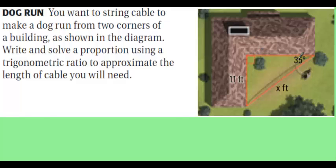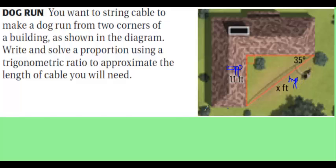You know the dog run is going to make an angle of 35 degrees with this part of the house. That is enough information, and that's why trigonometry is useful — it helps you solve problems without a lot of information. For the 35-degree angle, 11 is the opposite side, and the X we're trying to find is the hypotenuse because it's opposite the right angle. We look for whichever ratio is opposite over hypotenuse — that's sine.